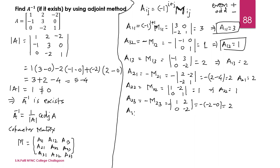Now A31: 3 plus 1 is even, so the sign is positive. The element is 0; deleting its row and column gives 2, minus 2 and 3, 0. The determinant is 0 minus 3 into 2, which is minus 6, and with the positive sign, we get A31 equals 6.